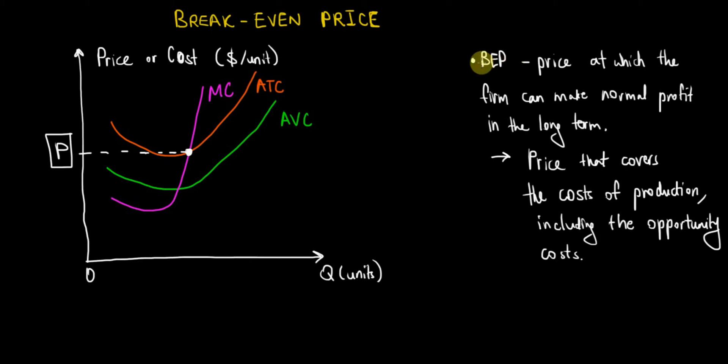To be more precise, the break-even price is the price at which the firm can make normal profit in the long term. Because we are discussing economic profit, this is the price that covers the cost of production including the opportunity costs.